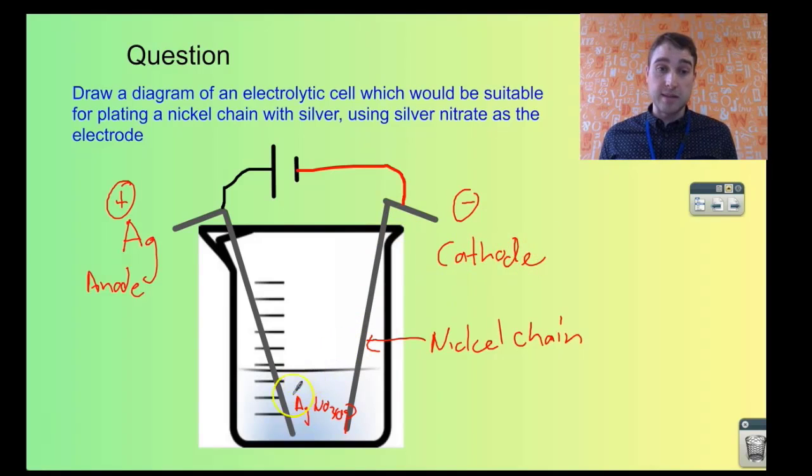What's happening is the silver ions from the solution will plate onto the nickel chain. They'll come out of solution and be reduced. Silver ions are reduced to silver on the surface of the nickel chain. We might plot the direction of the electron flow. The electrons are moving in this direction, from positive to negative, which is the reverse of what they would normally do. We're shoving in energy, so they're pushing in the non-spontaneous direction.